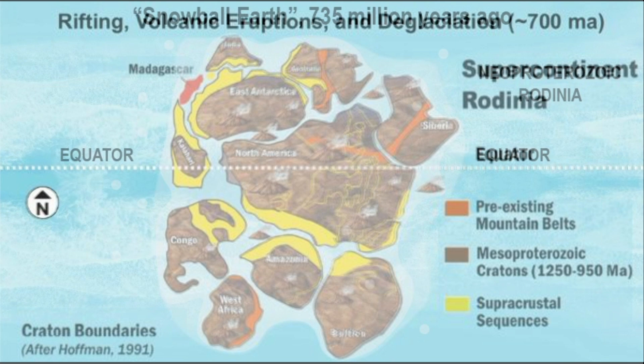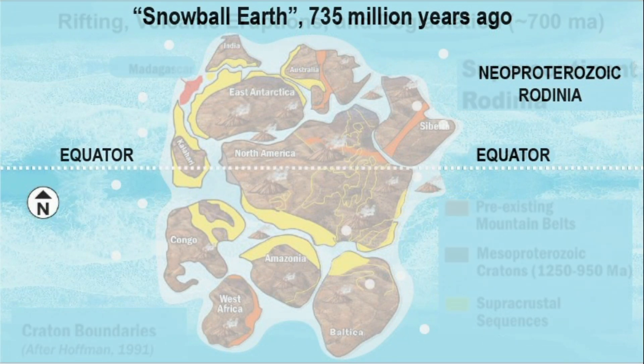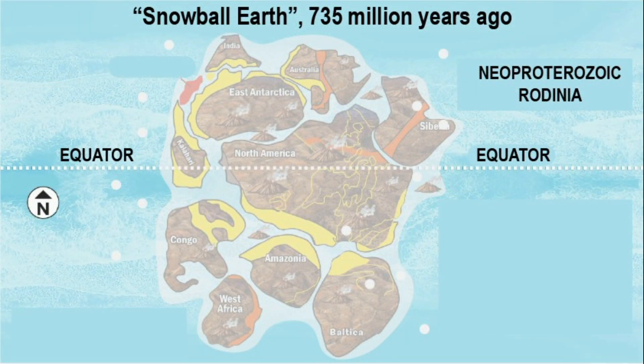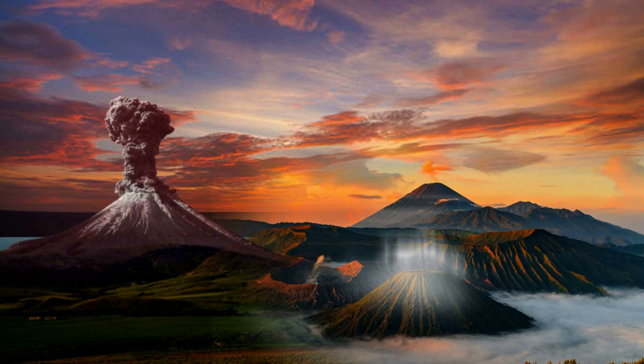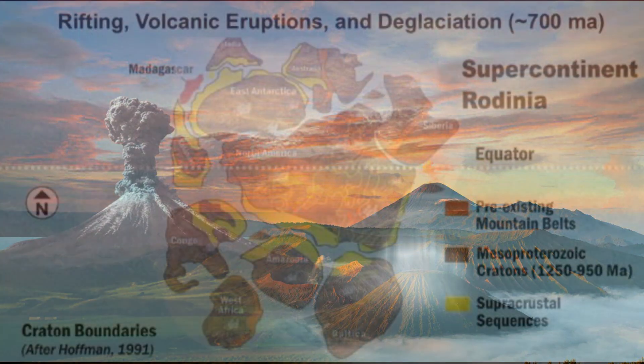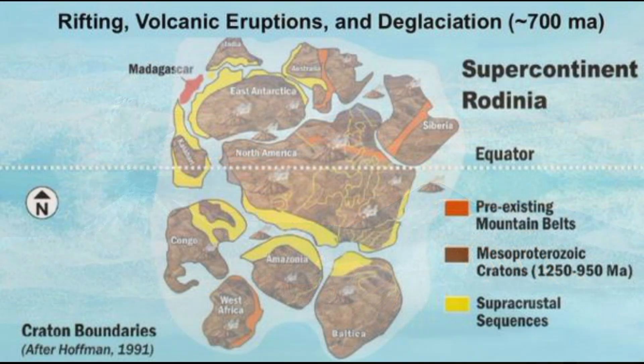We learnt in episode 17 that the greenhouse effect of the volcanic gases concentrating in the then-atmosphere during the syn-volcanic eruptions of these periods initiated deglaciation and the rescue of the snowball Earth.